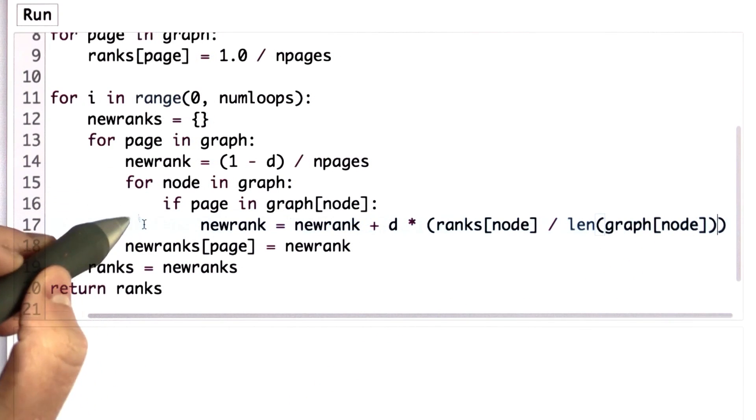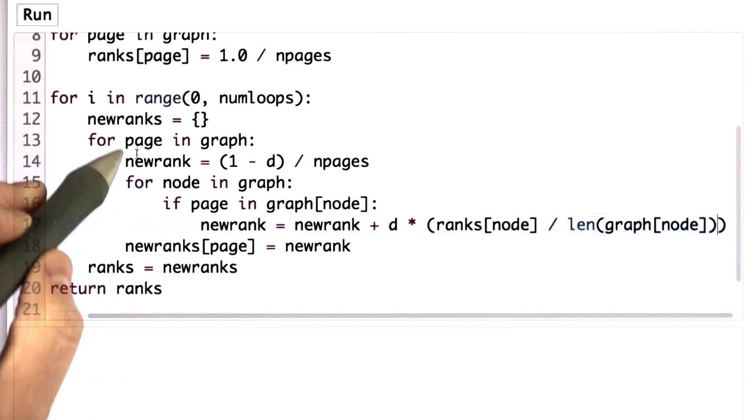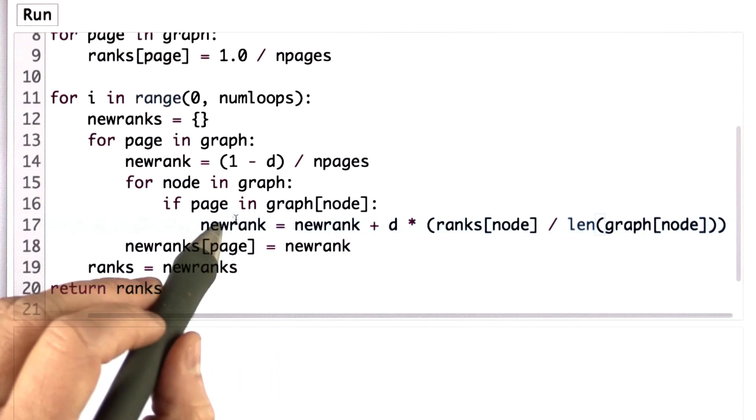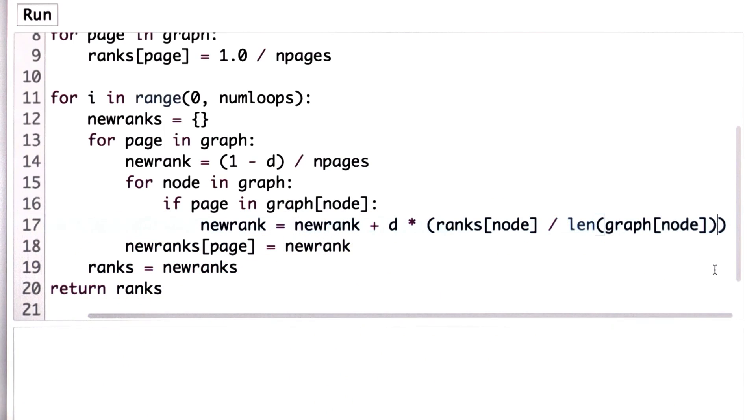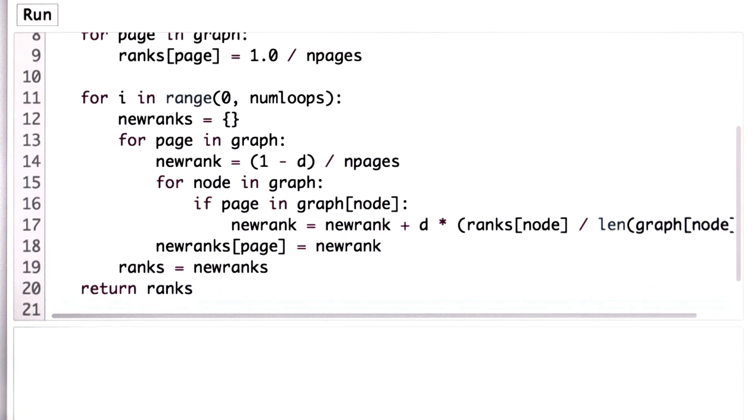So that's all we need. We're going to update the new rank. We're going through all the nodes in the graph. We're finding all the nodes that link to this one. And we're updating our rank using the formula to get that. And at the end, we're returning the ranks.